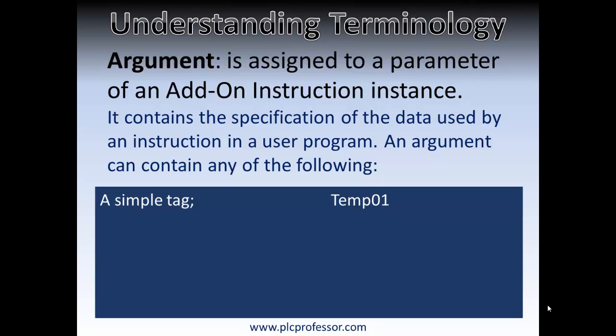This argument — and keep in mind, let's say we had an add-on instruction that was going to calculate volume of a rectilinear device like a cube or a rectangle. There would be three arguments: height, width, and depth. You would multiply those three values together and come up with a result. How we get those values into that routine is determined by whether it's by reference or by actual value.